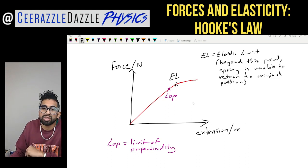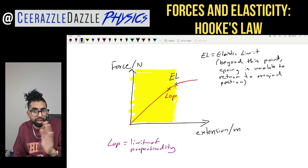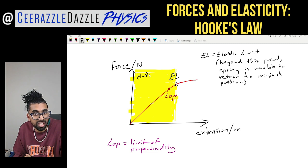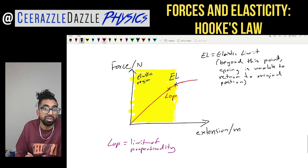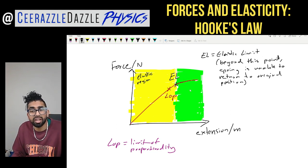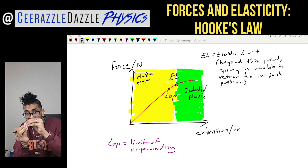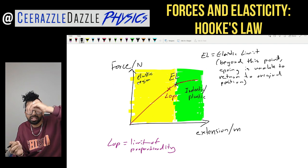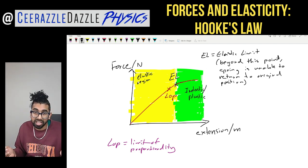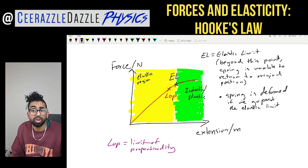Beyond the limit of proportionality there is another key point called the elastic limit (EL). The elastic limit is the point beyond which the spring will no longer return to its original position. The region before the elastic limit is called the elastic region — the spring can return to its original shape. Beyond the elastic limit is the inelastic region, sometimes called plastic behaviour, where the spring becomes permanently deformed.